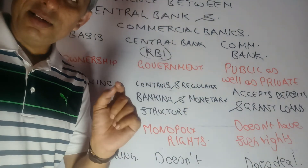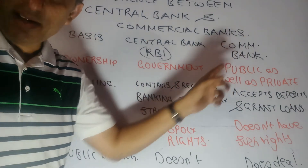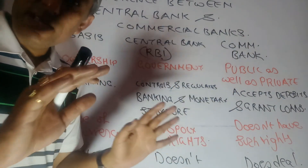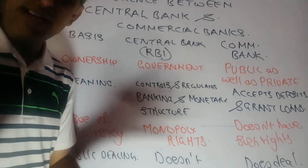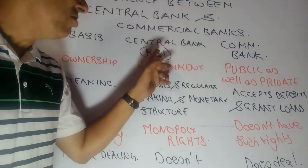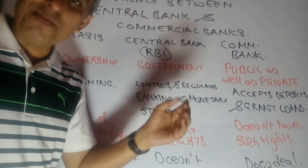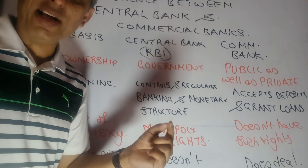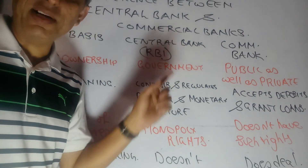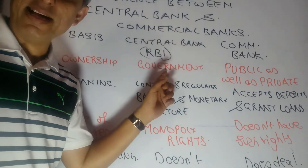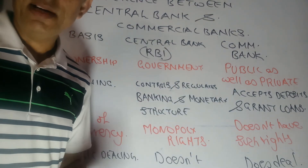Objective is another difference to remember. Self-interest is the key with commercial bank — they are driven by profit. Service to the economy and to the country is primarily the objective of central bank. Objective is different as far as central bank is concerned when compared with commercial bank.